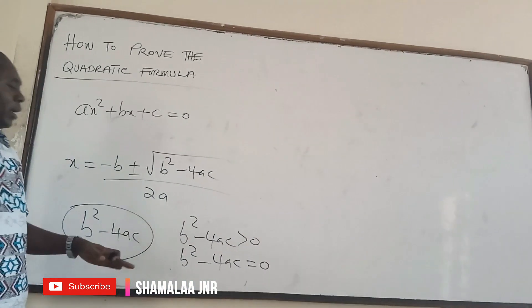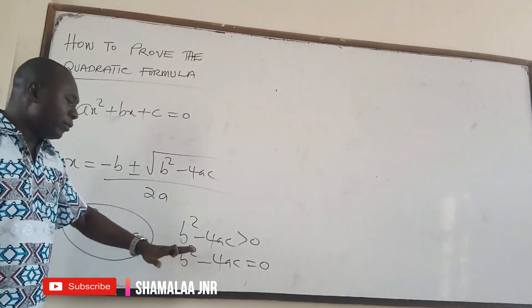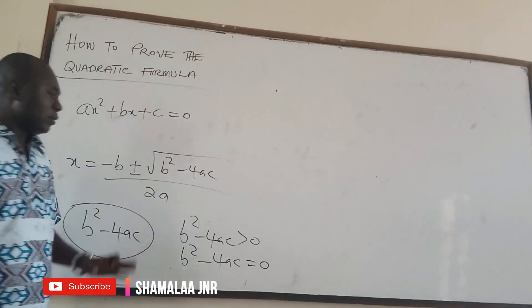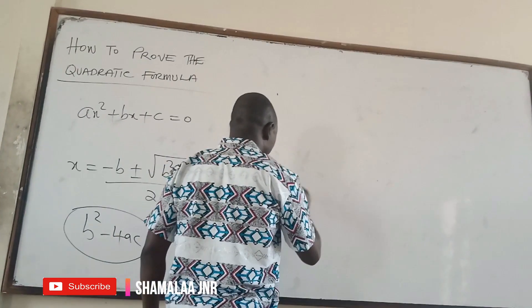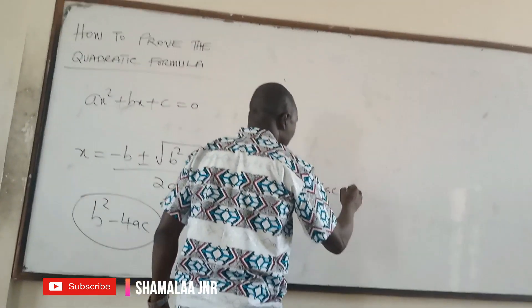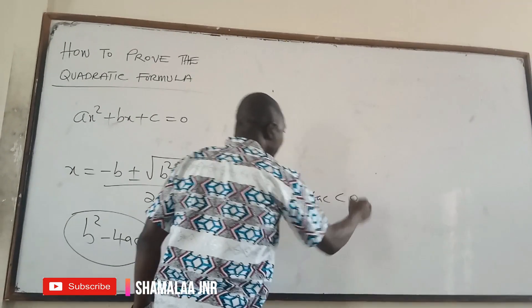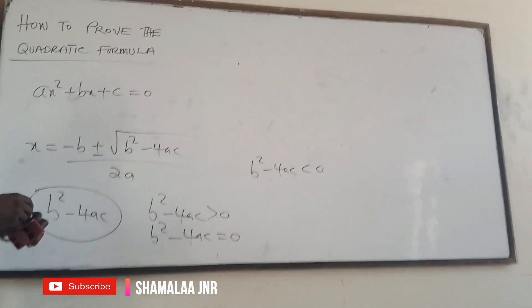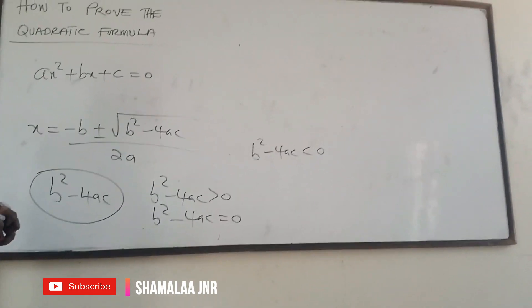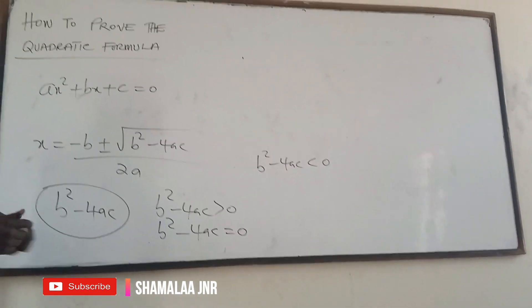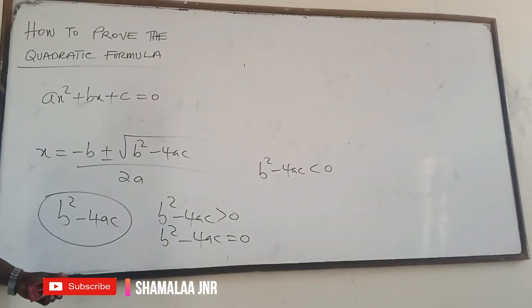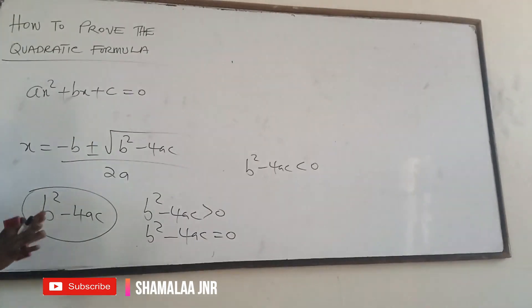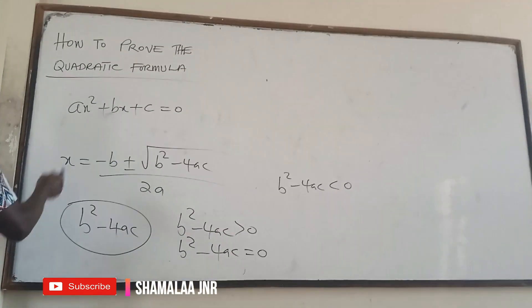When b² minus 4ac is equal to zero, you get two real roots which are equal. And when b² minus 4ac is less than zero, you are not going to get real roots — the roots are going to be imaginary or complex.